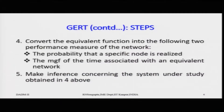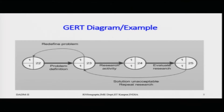In step five you make inferences concerning the system under study. You have the moment generating function based on the time factor, and the probability that a specific network path would be traversed — one being the probability distribution function and the other being the time found using the moment generating function. Consider now a very simplistic version of the GERT network.